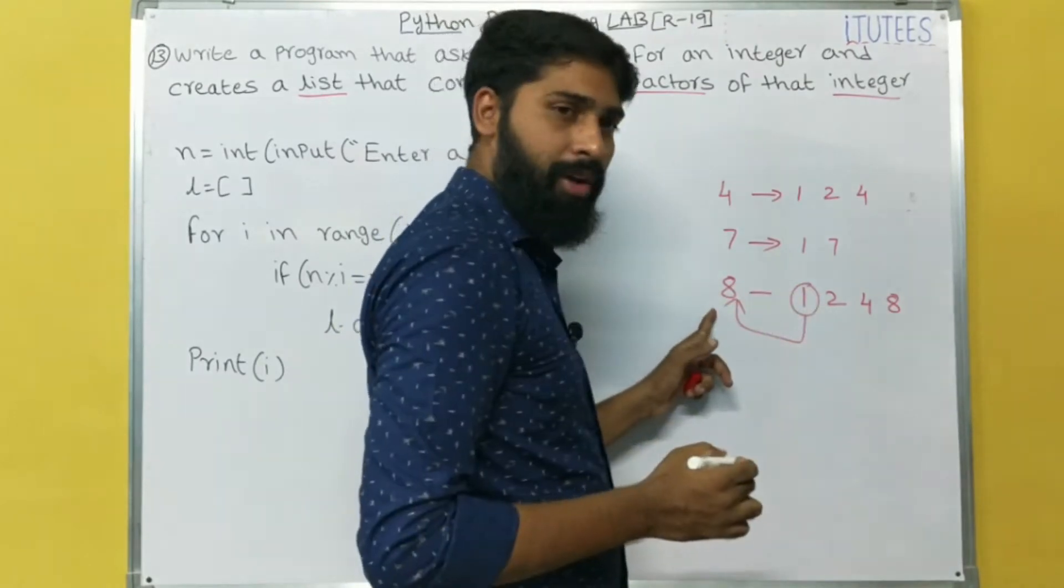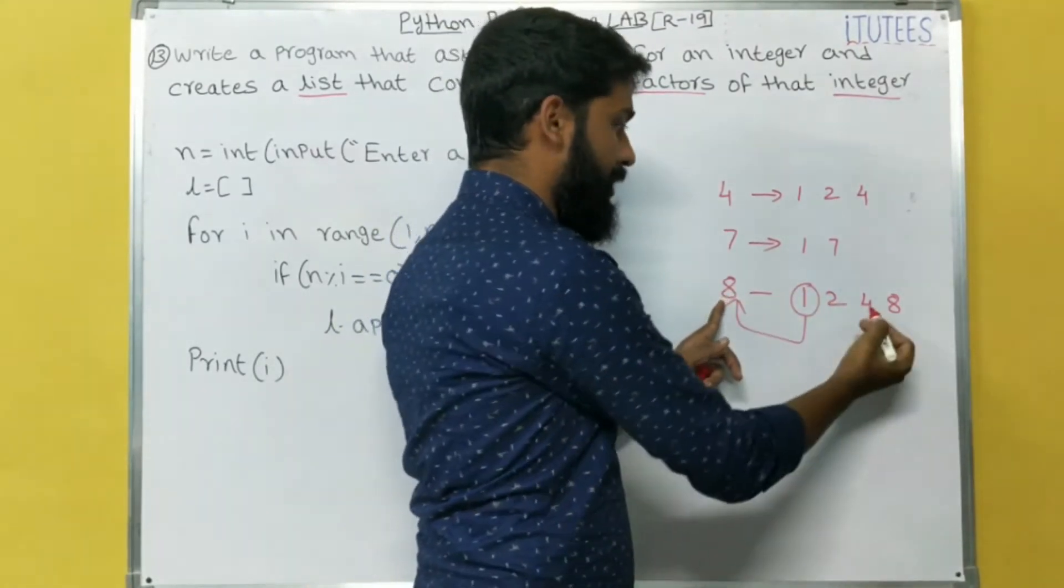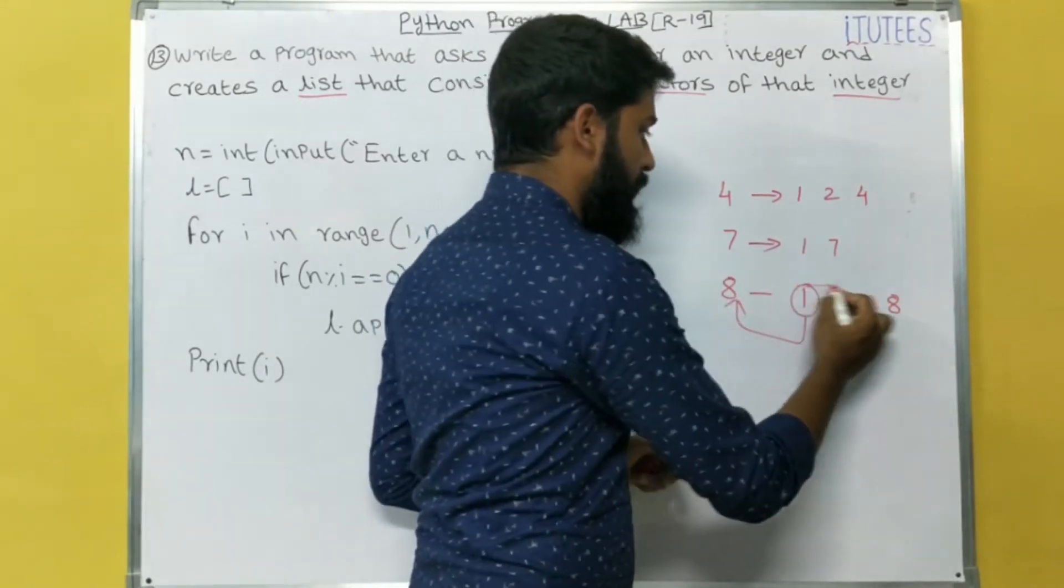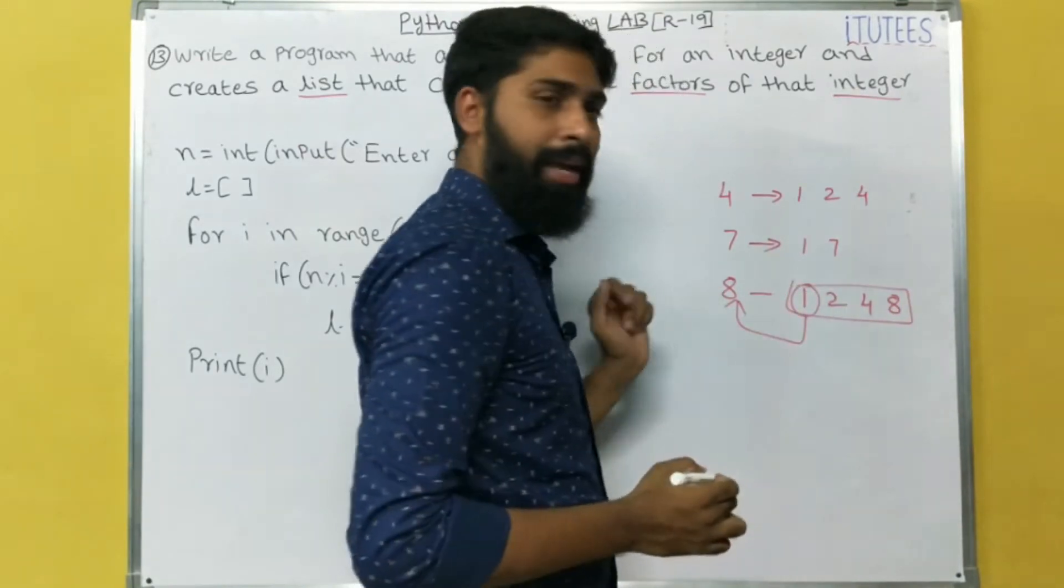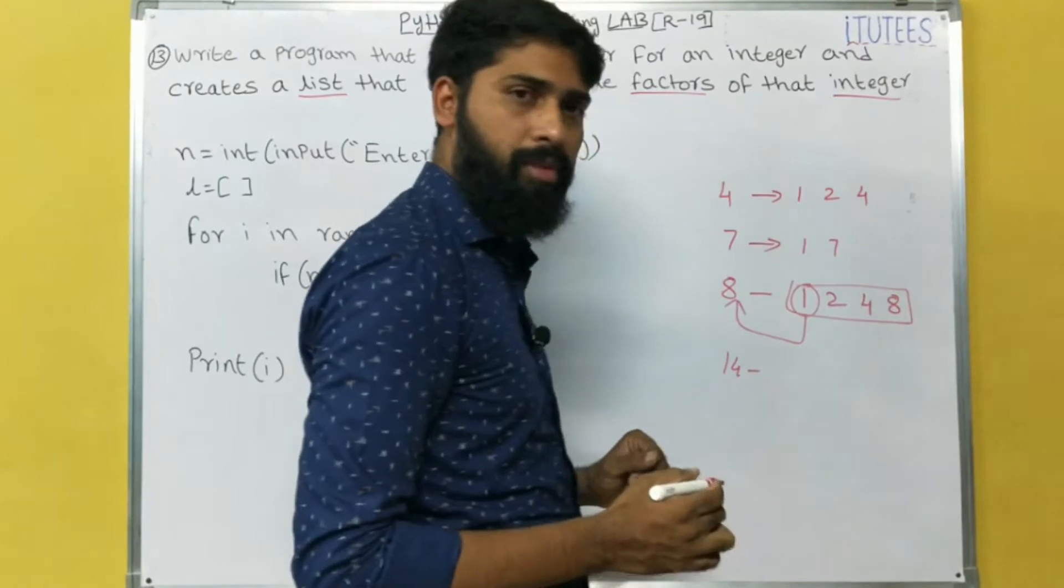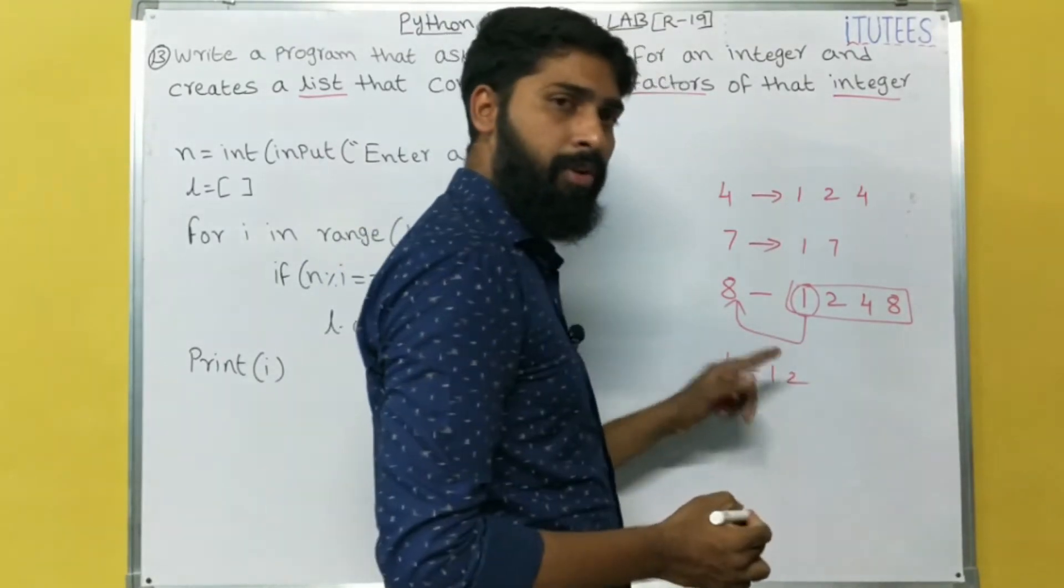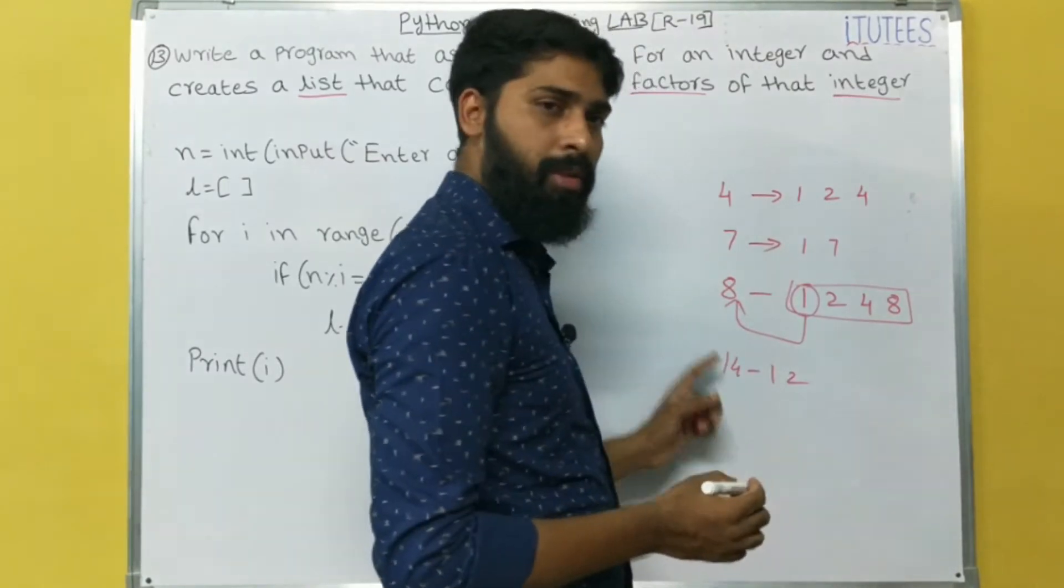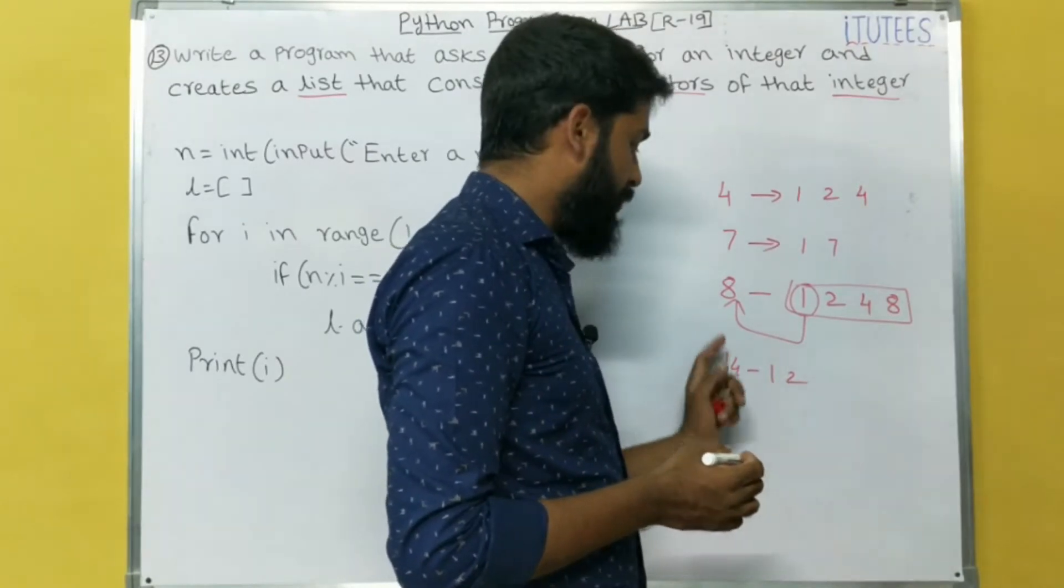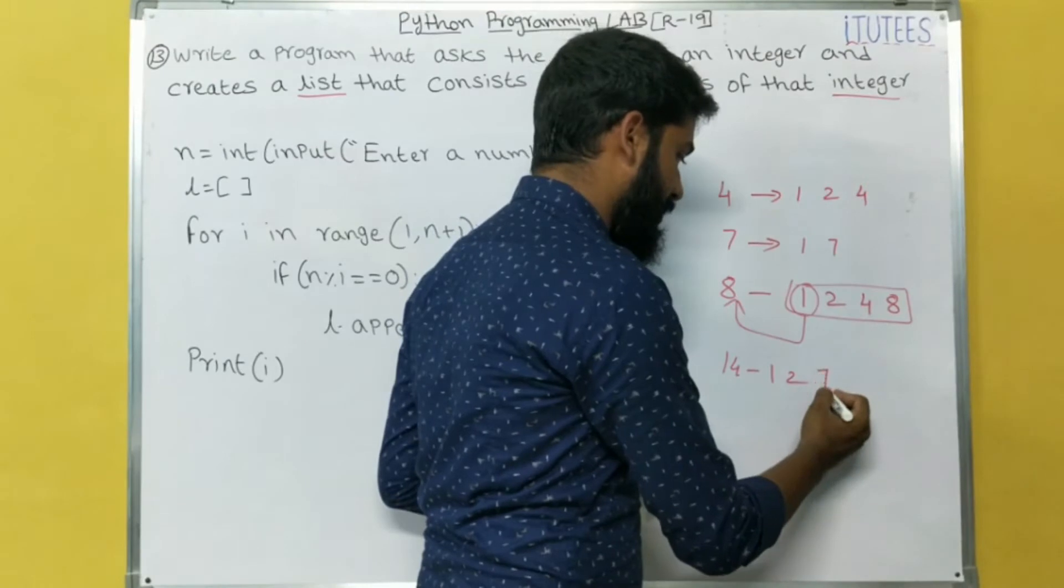8 is divisible by 1, and 8 is divisible by 2, and 8 is divisible by 4, and 8 is divisible by 8. So these four are the factors for 8. In a similar way, if you are taking 14: 14 by 1, divisible. 14 by 2, divisible. 14 by 3, no, not divisible. 14 by 4, not divisible. 14 by 5, not divisible. 14 by 6, not divisible. 14 by 7, divisible. So 7 is a factor.